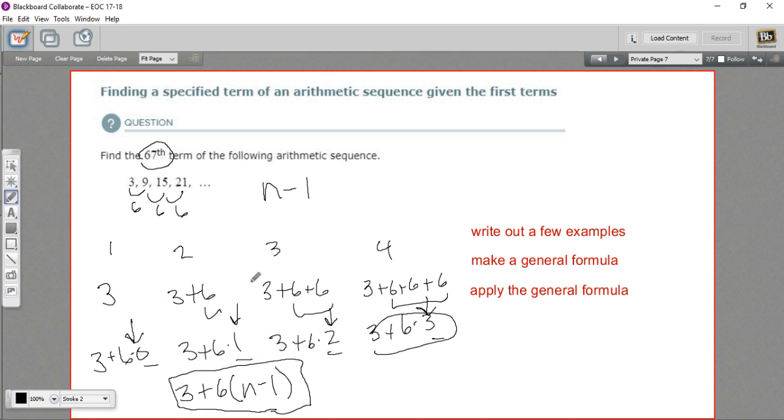All right, we're almost there. Now to find the 67th term, all I have to do is put in 67 for n. So this would become 3 plus 6 times 67 minus 1. And that is 3 plus 6 times 66. And let's see, 6 times 66, that's 396. So 3 plus 396 is 399. And that is our answer.